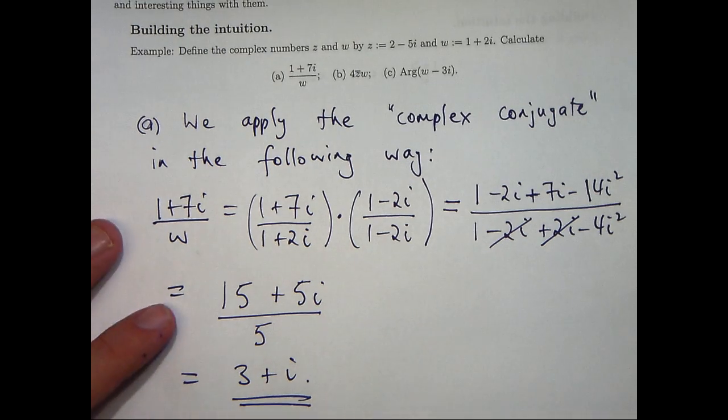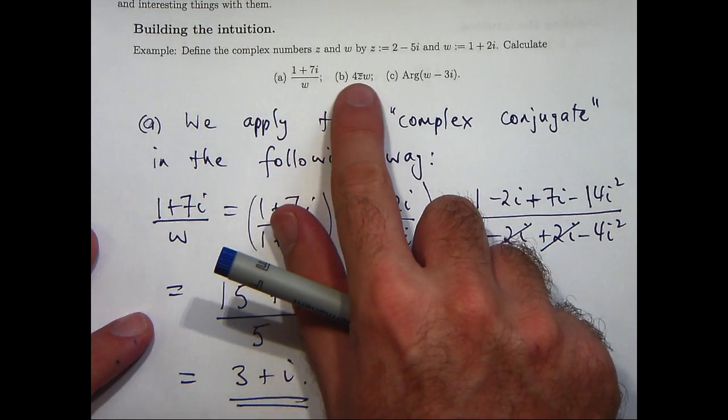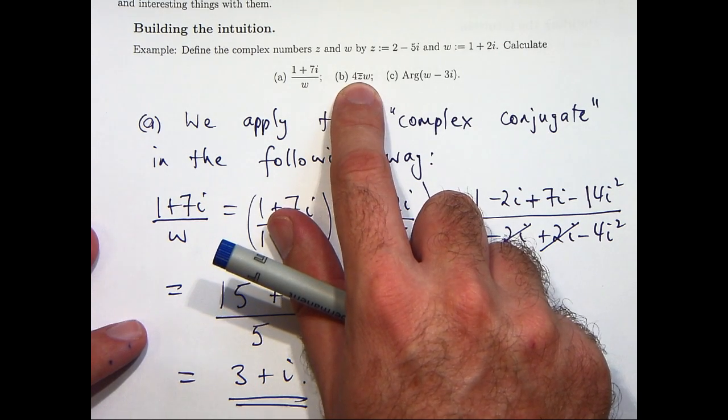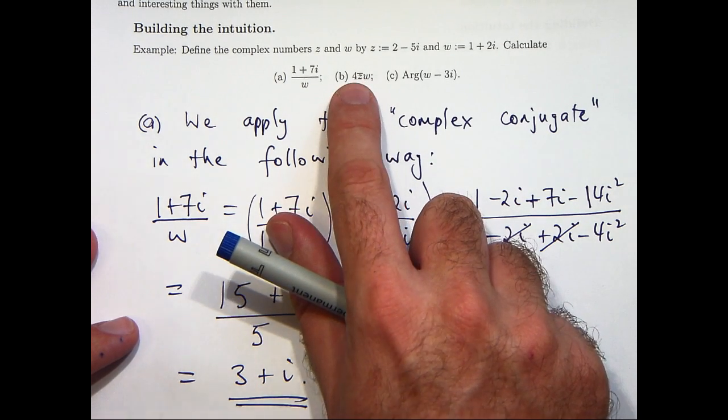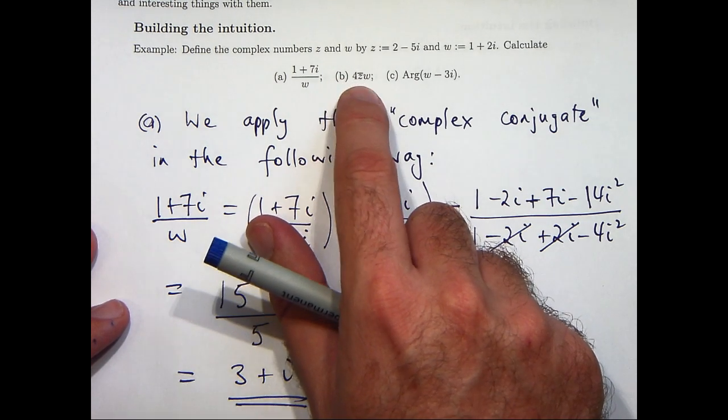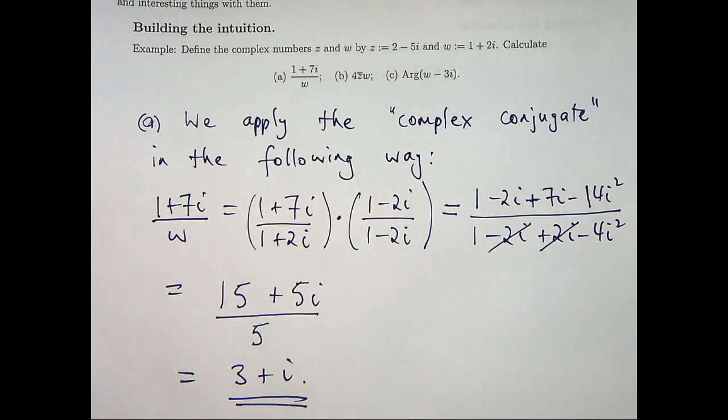Okay let's move on to the next part of our question. Here we've got a product and we want to calculate 4 times z bar times w. Now the bar here means conjugate. So 4 times the conjugate of z times w. How do we do that?